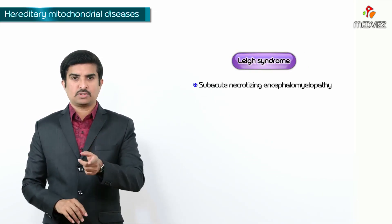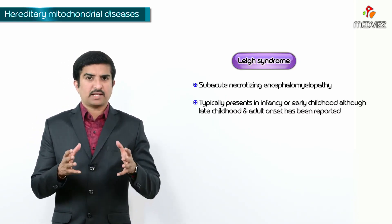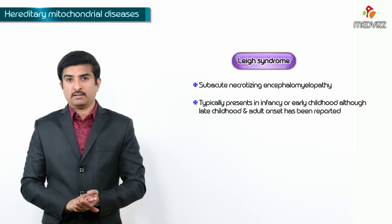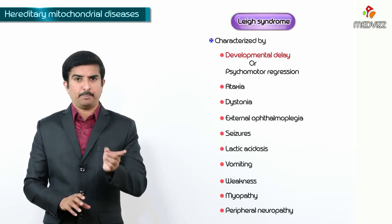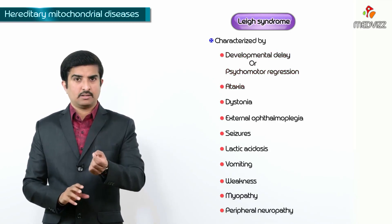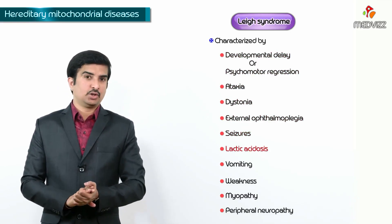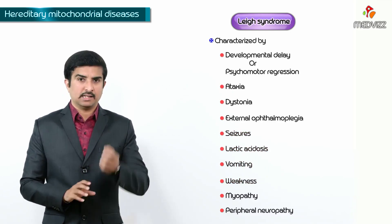The next condition is Leigh syndrome, also called subacute necrotizing encephalomyelopathy. It typically presents in infancy or early childhood, though cases in late childhood and adults are also seen. It is characterized by developmental delay or psychomotor regression, ataxia, dystonia, external ophthalmoplegia, seizures, lactic acidosis, vomiting, and weakness. These are the main symptoms seen in Leigh syndrome.